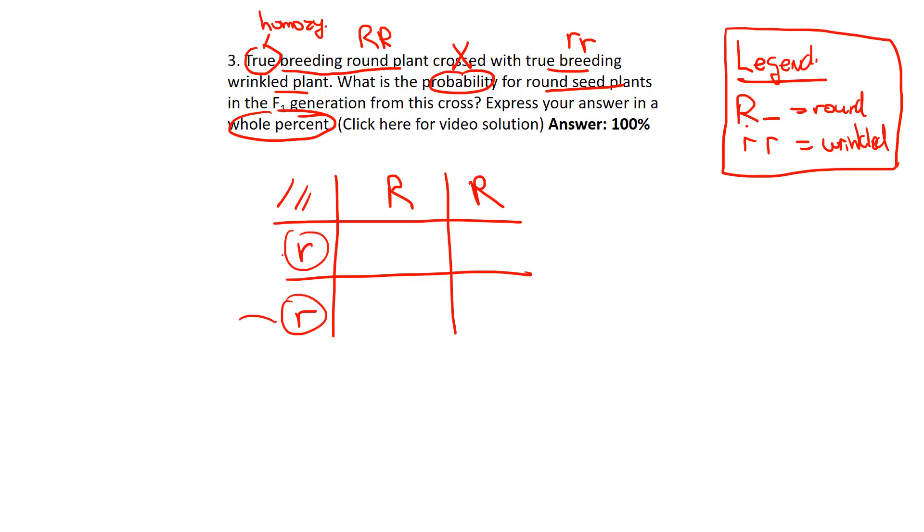These indicate sperm—those are the actual gametes. You don't have to draw those, but let's remind ourselves what we're actually doing with the Punnett square. Now fill in those genotypes. If that egg got fertilized by this sperm, you're going to have a round offspring.